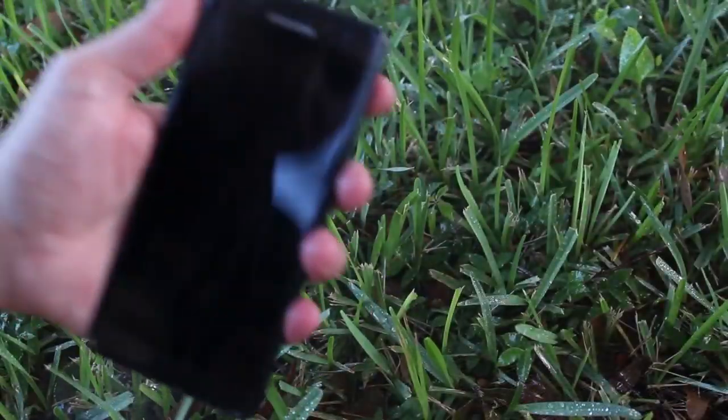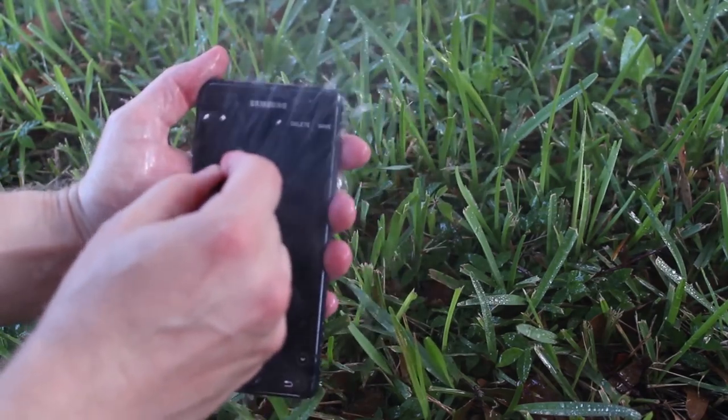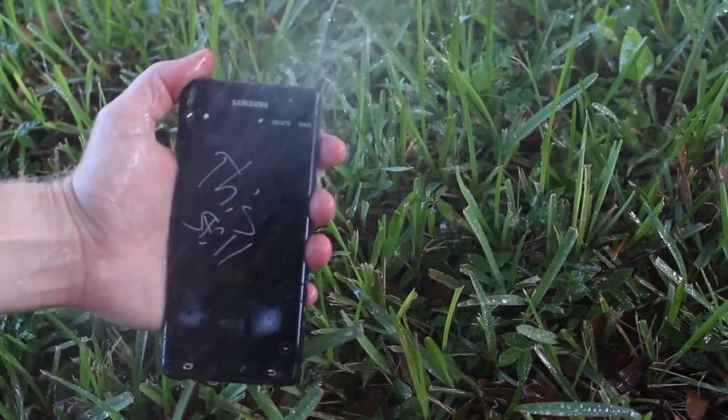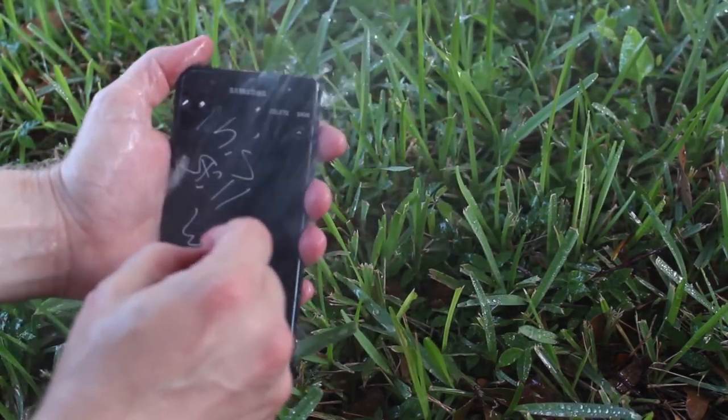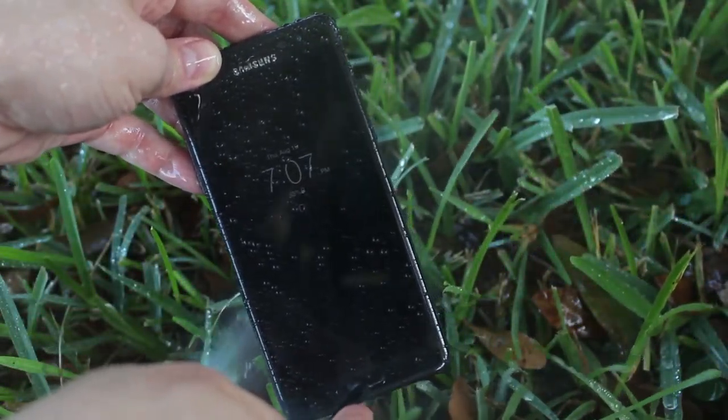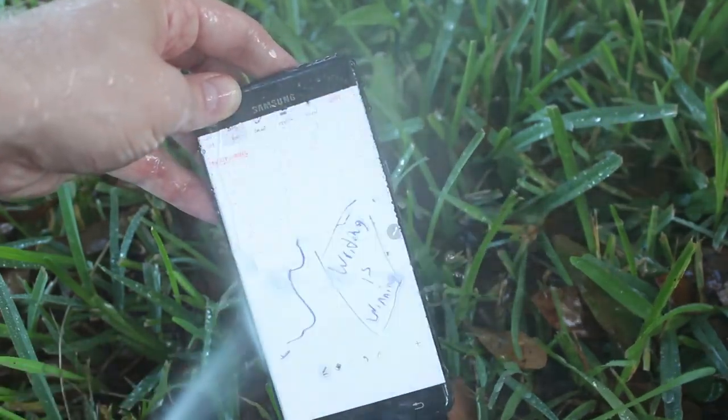You can now even use the S Pen's functionality underwater thanks to the IP68 water and dust resistance. But of course the uses for these are going to be niche to say the least. The best use I could find for this was using the phone when my fingers were wet, since the S Pen actually uses a completely separate digitizer than the one that detects the electrical impulses in our skin, and that usually gets messed up when water comes into contact.